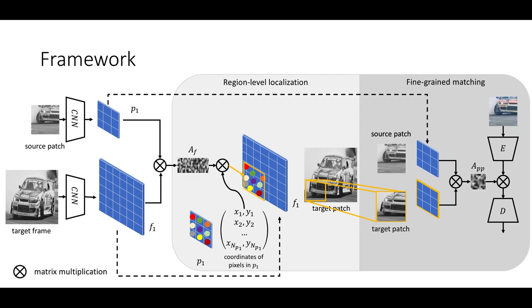We reconstruct the target patch features and map them back to the image space values by the pre-trained decoder D. Finally, we calculate the objective, for example, the L1 distance between reconstructed and the ground truth target patch.